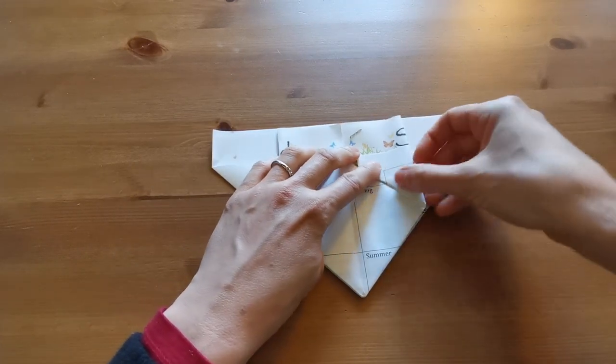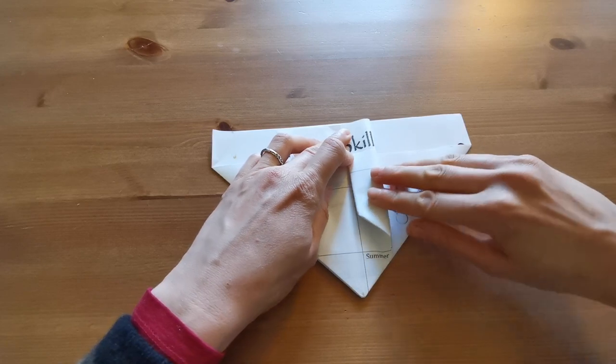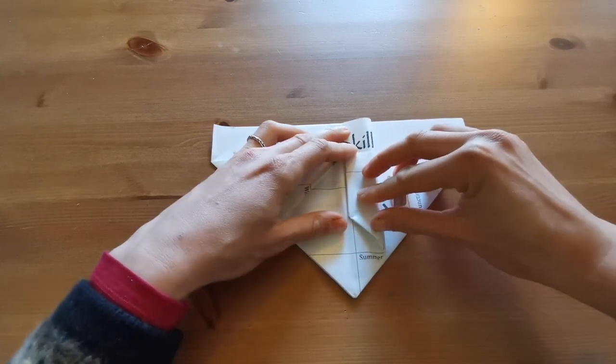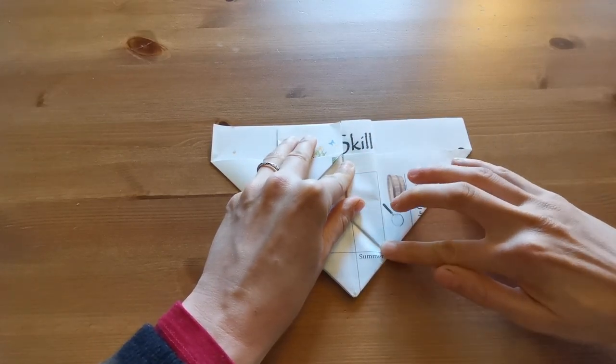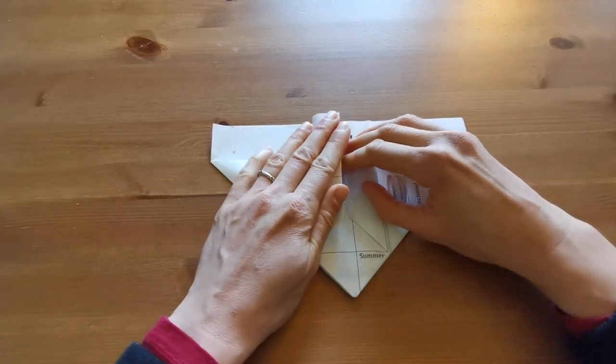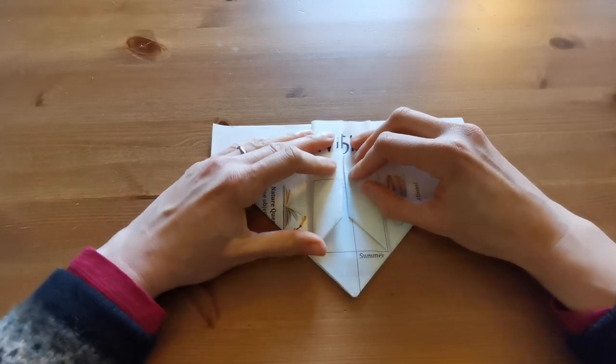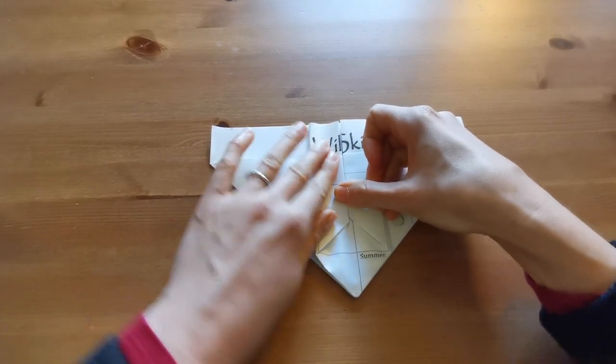Now we're going to repeat the last two steps, bringing the outside edges in to meet the center seam. This step allows us to have a deep seedling pot rather than a shallow one, which encourages deep root growth.